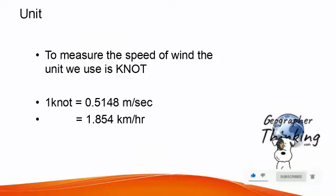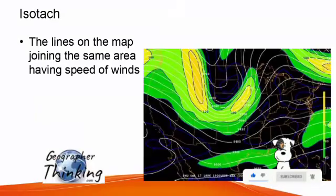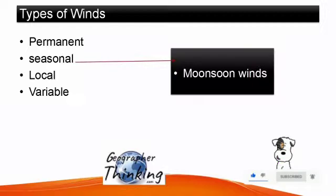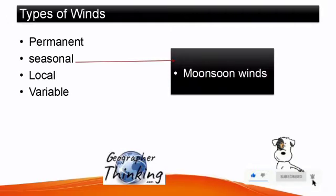The unit used for wind speed is the knot. One knot is equal to 0.5148 meters per second and 1.854 kilometers per hour. Isotach is the line on the map joining areas having the same wind speed. There are four types of winds: permanent winds, seasonal winds, local winds, and variable winds.